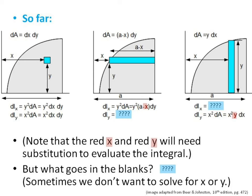So if you have a horizontal stripe, then your dA is (a minus x) dy, and we know that we can find this particular one by solving. So we have y squared dA, we have a dA that's in terms of dy, and as long as we can solve right here, we're in good shape.